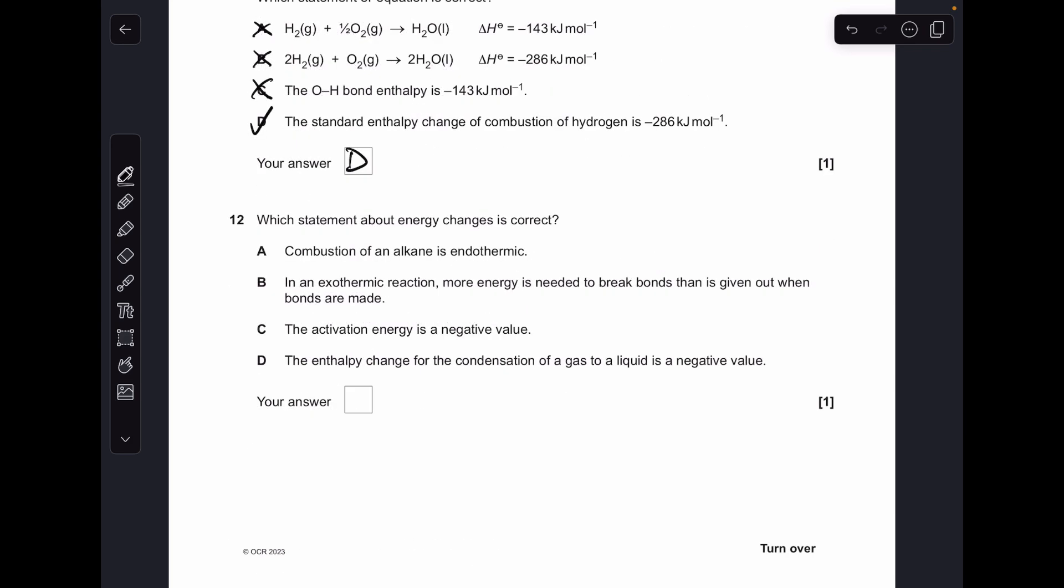Number twelve, continuing the theme of enthalpy change. Which statement is correct about energy changes? Combustion of an alkane is endothermic—absolute nonsense, exothermic process. In an exothermic reaction more energy's needed to break bonds and given out—no, that's the wrong way around, you get more energy out than you have to put in, so that's wrong. Option C, activation energy negative value—that's rubbish, it's got to be a positive value. So again option D is the right answer.